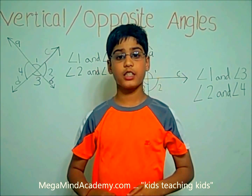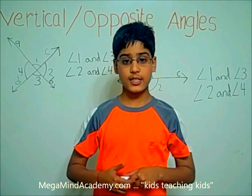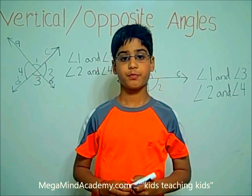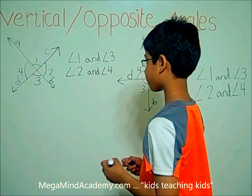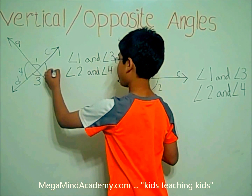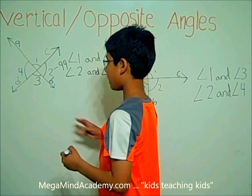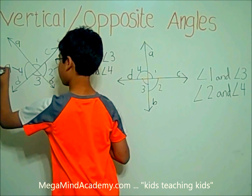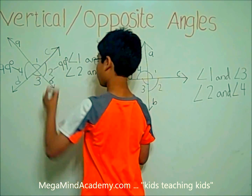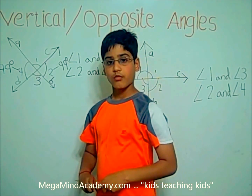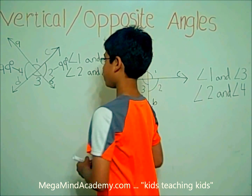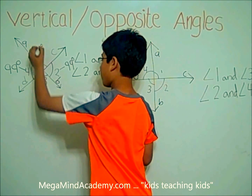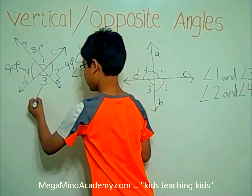Another property of vertical angles is that vertical angles have the same measure. Let's say that angle 2 measures 99 degrees — angle 4 automatically measures 99 degrees. And if angle 1 measures 81 degrees, then angle 3 automatically measures 81 degrees.